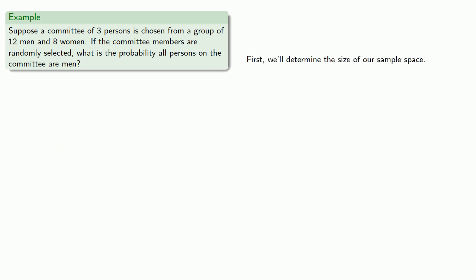First we'll determine the size of our sample space. Now, we're forming this committee of 3 persons, and so we're choosing 3 people out of 12 men and 8 women, 20 people. And we can do this in 20 combined 3 ways, and so our formula gives us...